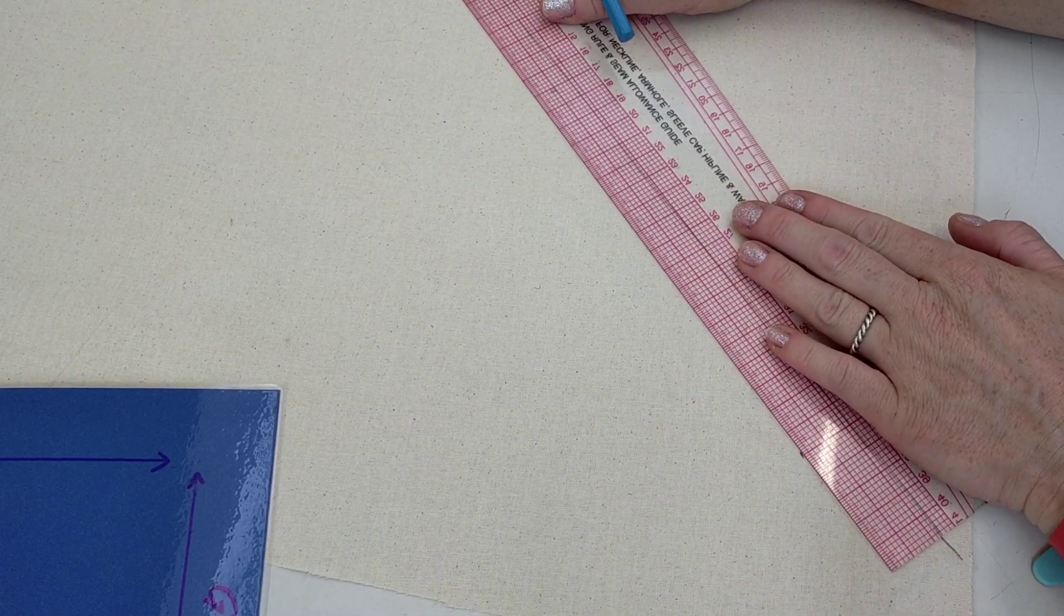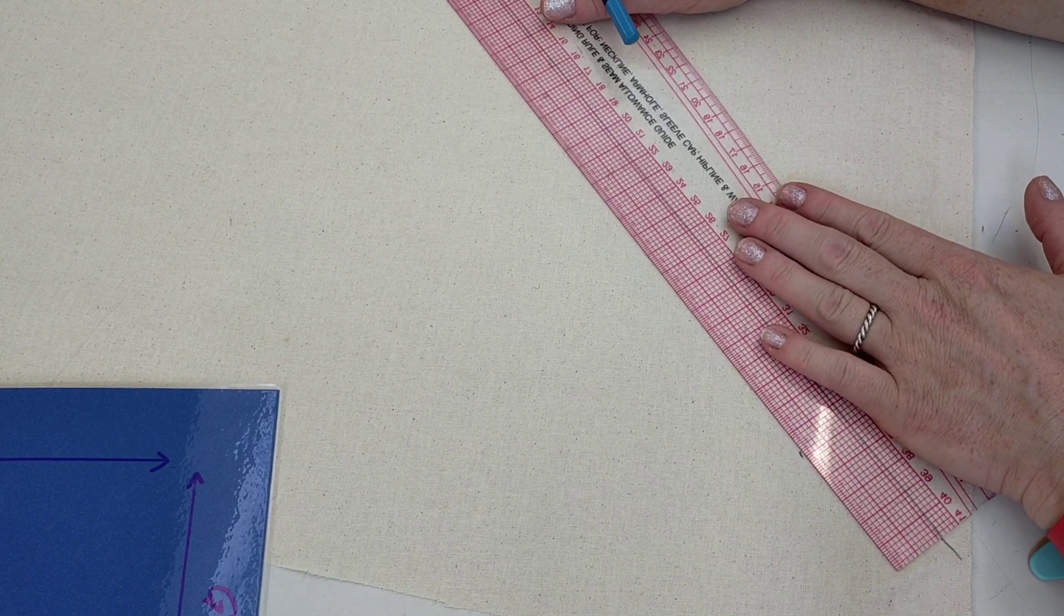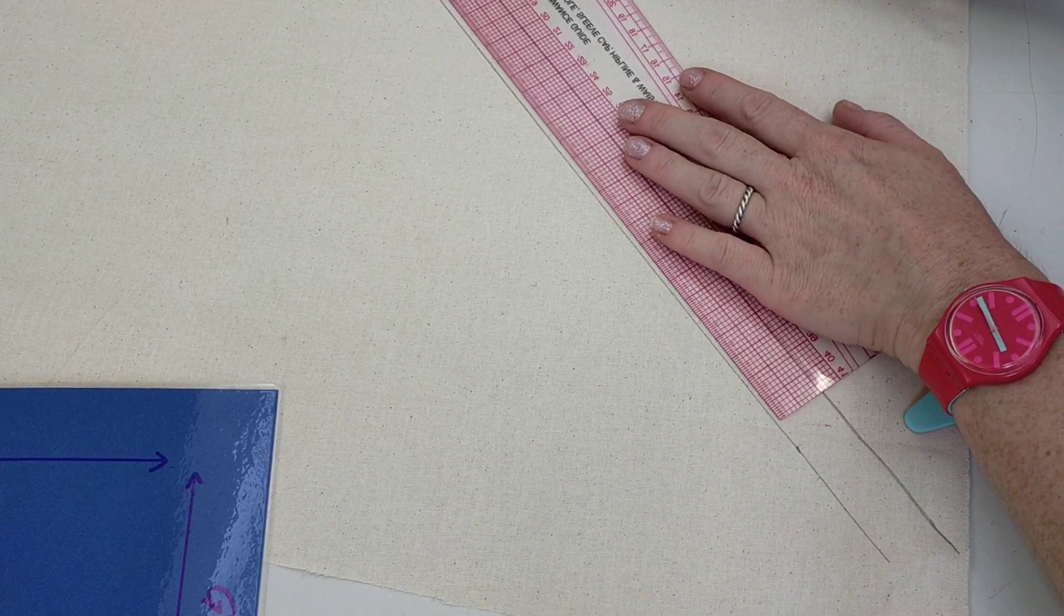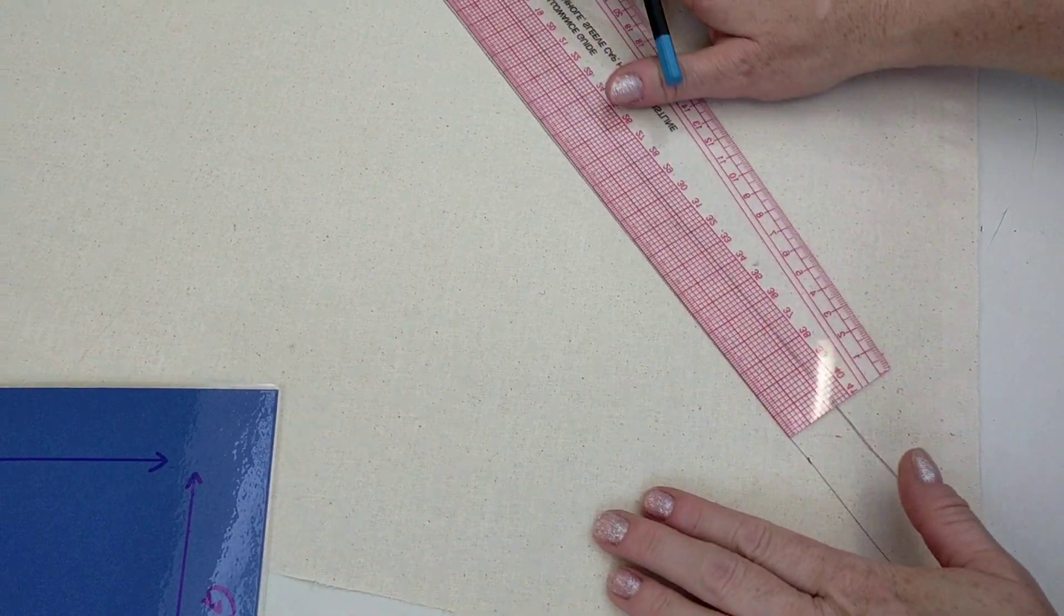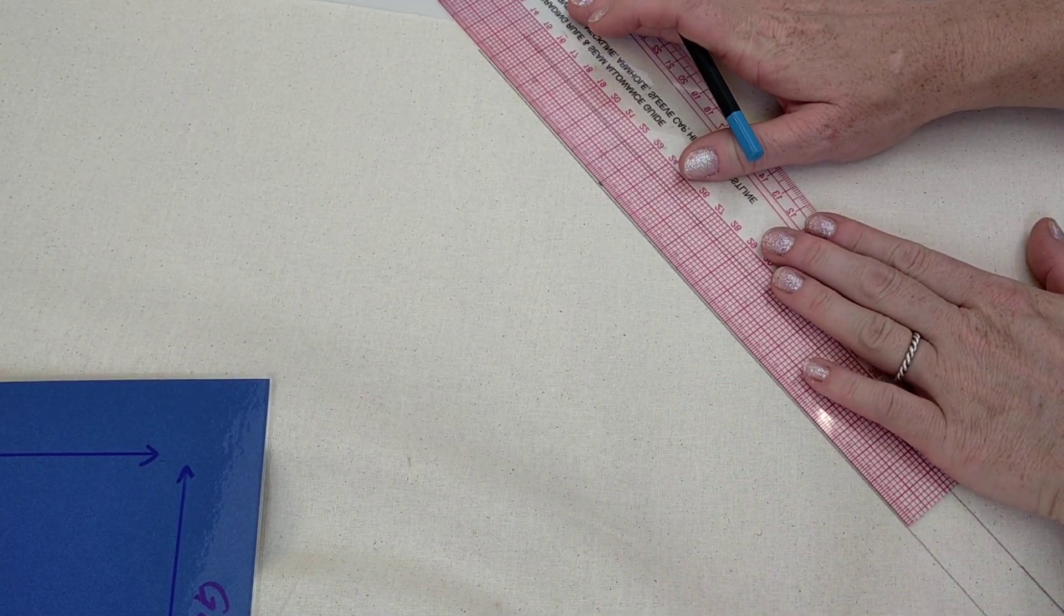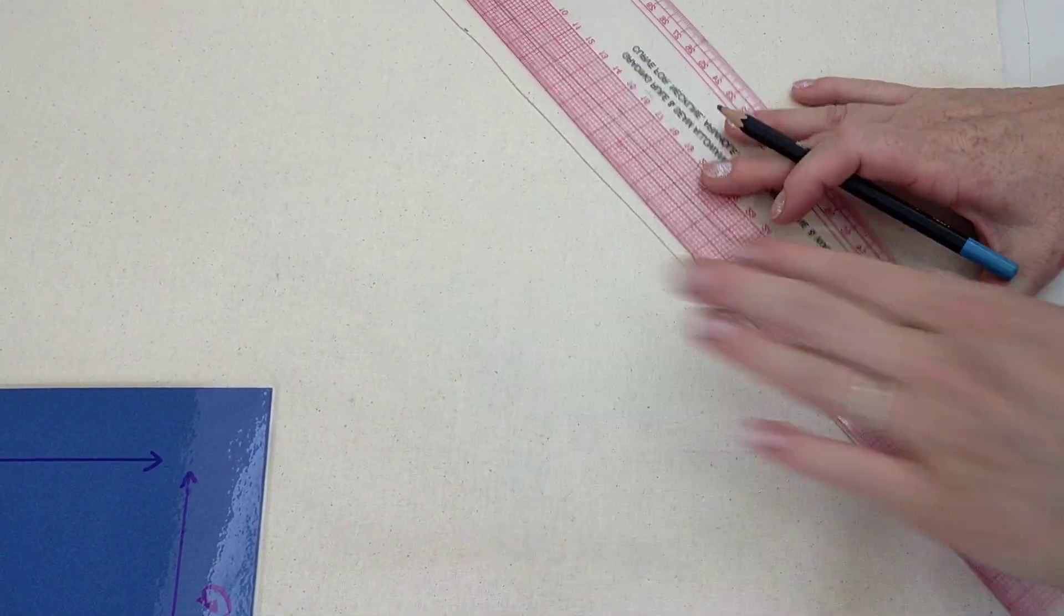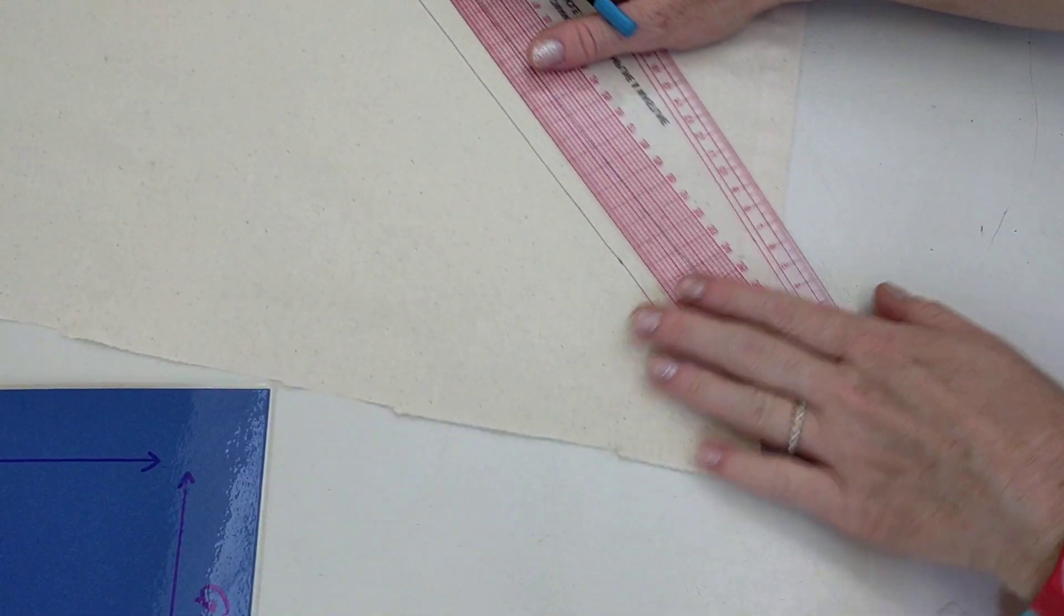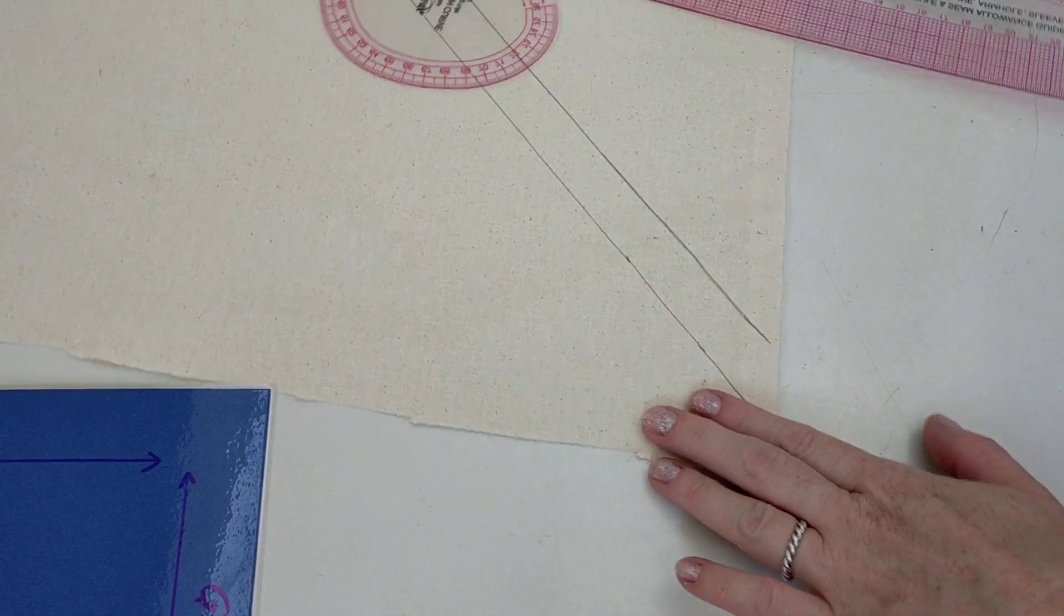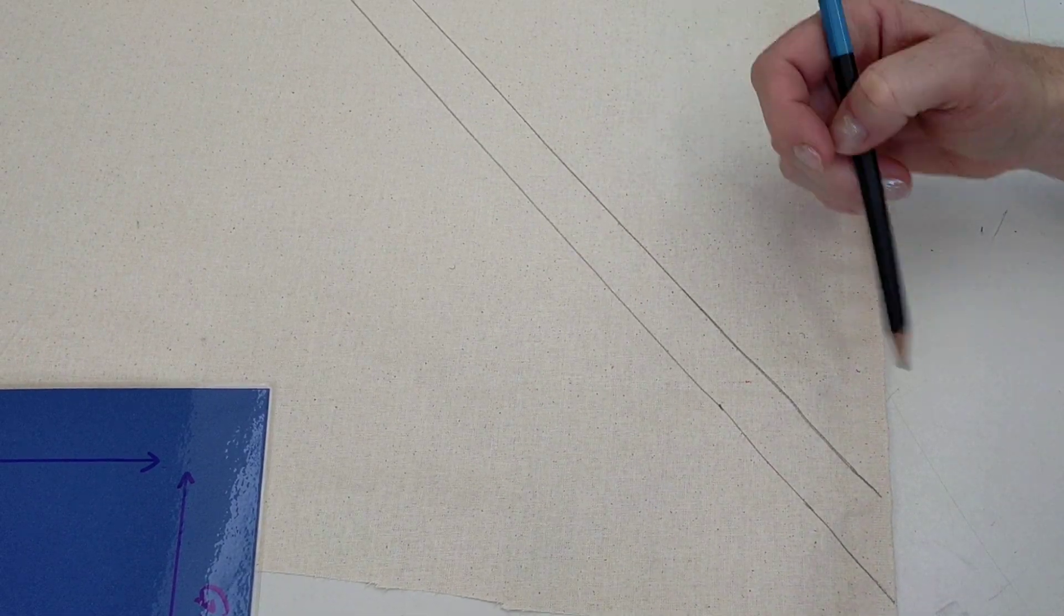So I'm going to mark that on my line, and then I can rule that together, making sure it's parallel with the original line, and go all the way to the edge. Looking at that, that looks pretty parallel, which is perfect. That's what I need.